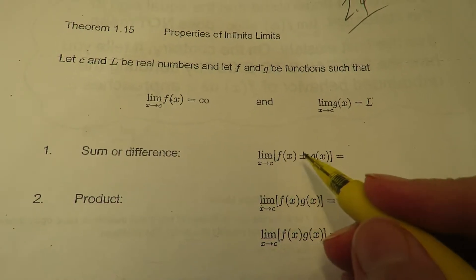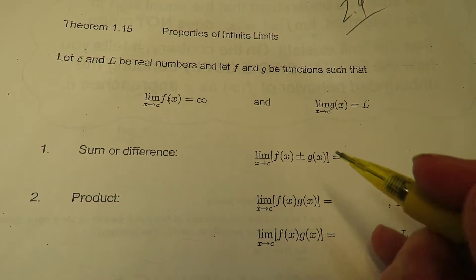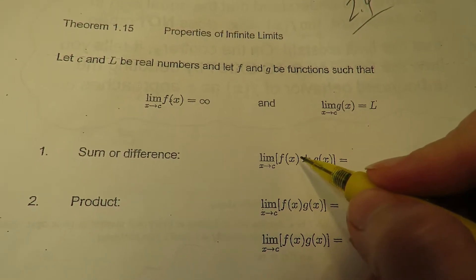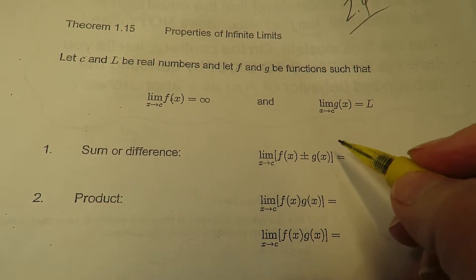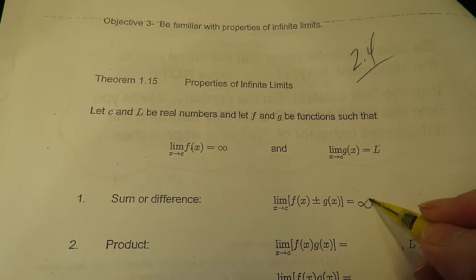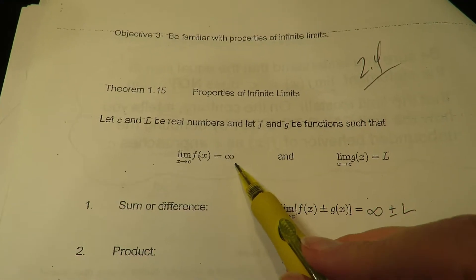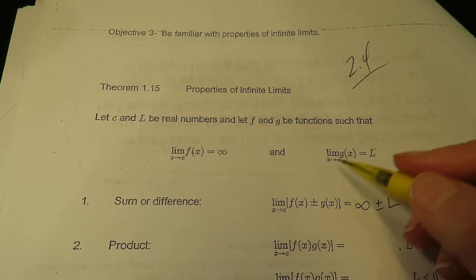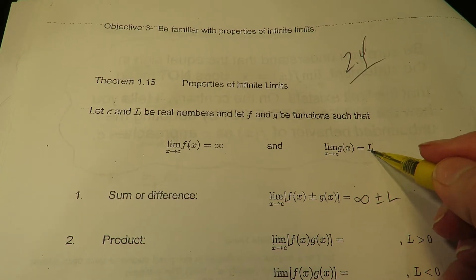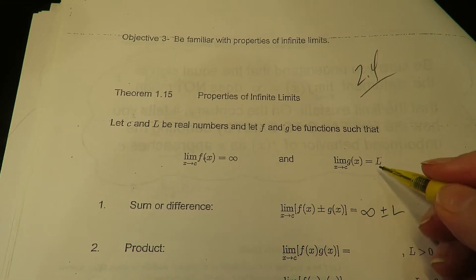Alright, so here we go. And you've seen this a little bit now from 4.6, so this won't be totally new. So if you're going to do the sum and difference of the limits, that's like infinity plus or minus L, right? Because this one's infinity, this one's L. Now try to remember that this is just a fixed value. So if it helps you, you could think of L just for our case, just to make this easier.